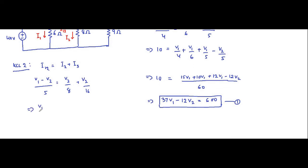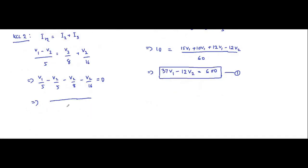This gives us: V1/5 minus V2/5 minus V2/8 minus V2/16 equals 0. The common multiple is 80, so: 16V1 minus 16V2 minus 10V2 minus 5V2 equals 0, which simplifies to 16V1 minus 31V2 equals 0. This is equation 2.